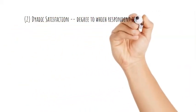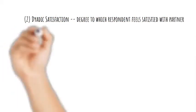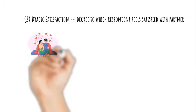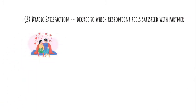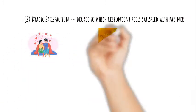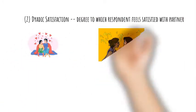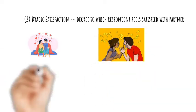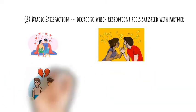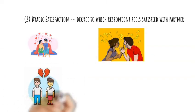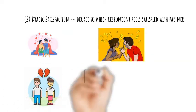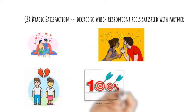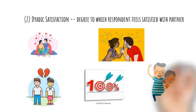Dyadic satisfaction is the degree to which the respondent is satisfied with the relationship. It measures the extent to which the individual has considered ending it. Higher scores on dyadic satisfaction indicate satisfaction with the present state of the relationship and commitment to its continuance.